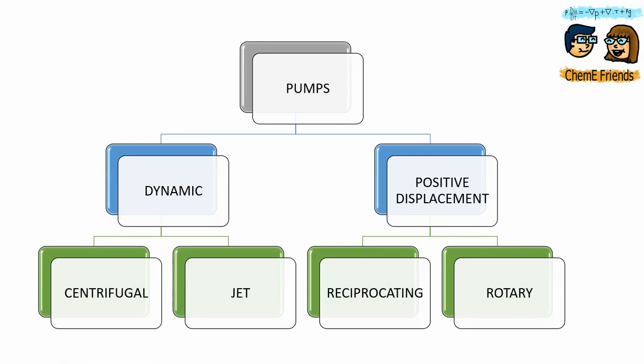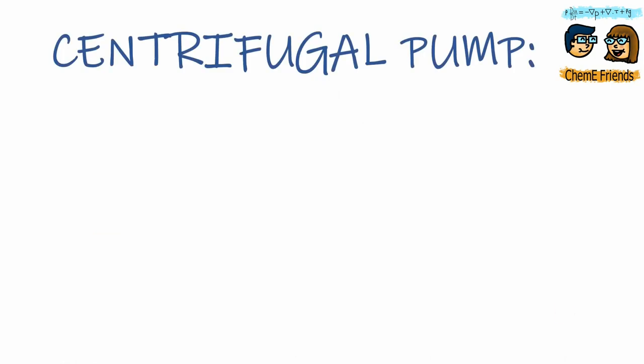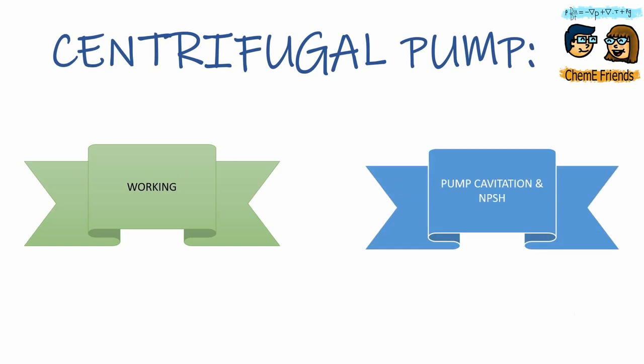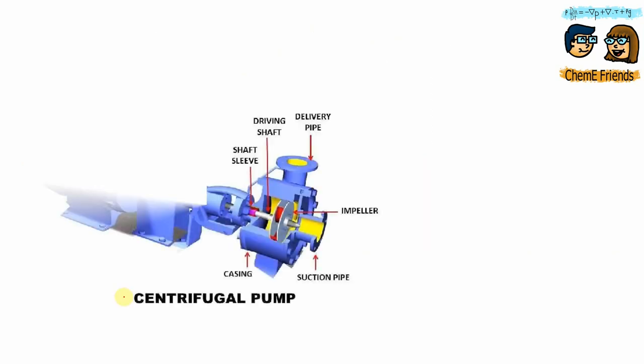Pumps can be classified as dynamic and positive displacement. Dynamic pumps are of two types: centrifugal and jet. And positive displacement are of two types: reciprocating and rotary. We will be talking about centrifugal pumps. First, we will talk about the working and then the two famous terms, pump cavitation and NPSH. We will see how these two terms affect pump performance and why they are so important.